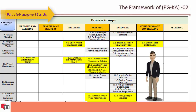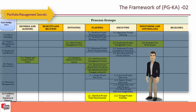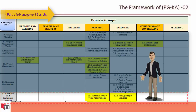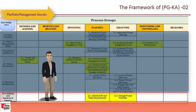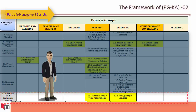Knowledge area twelve is facilities and equipment support, with three processes: establish project team requirements, manage project facilities, and manage project equipment.